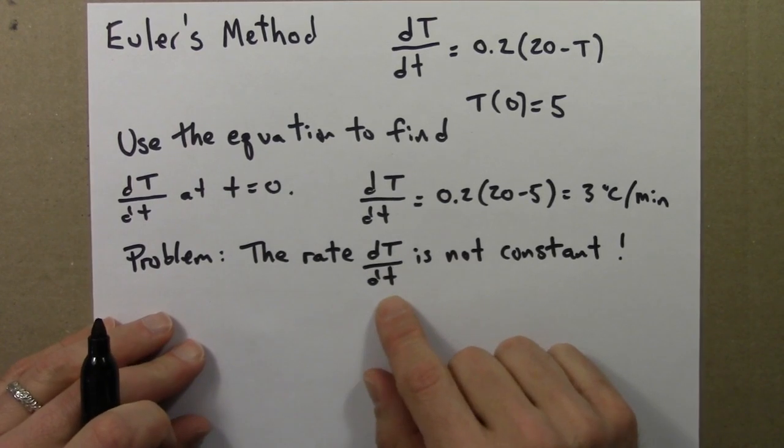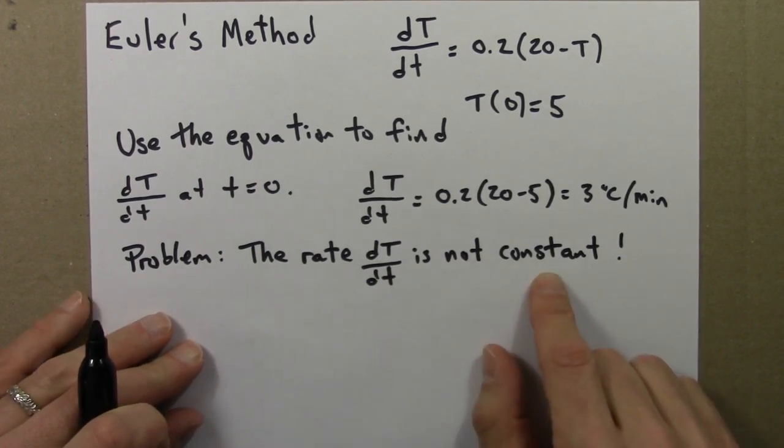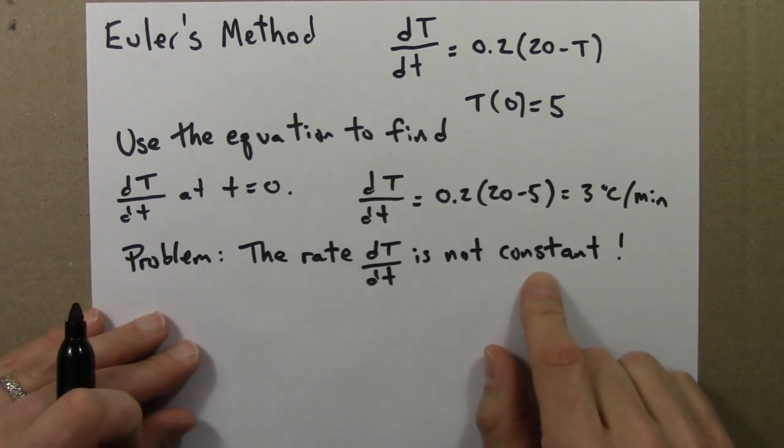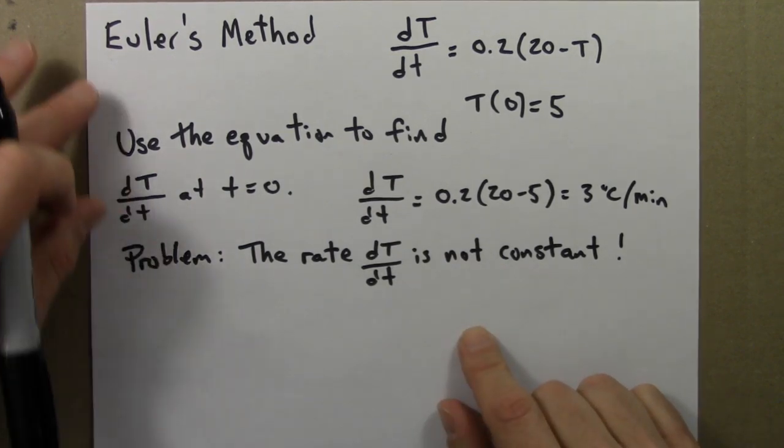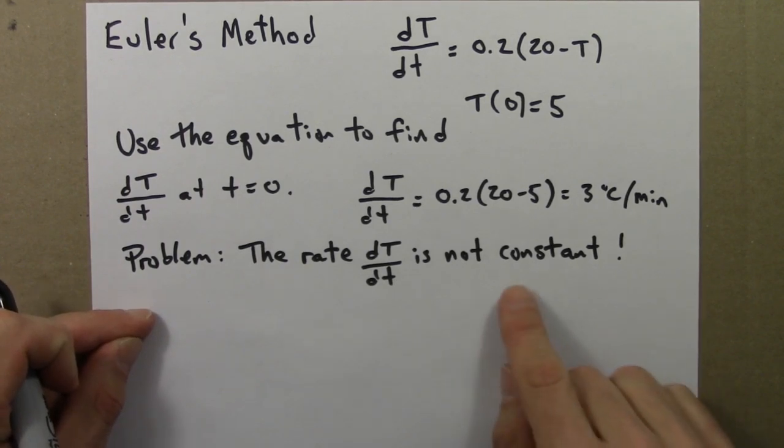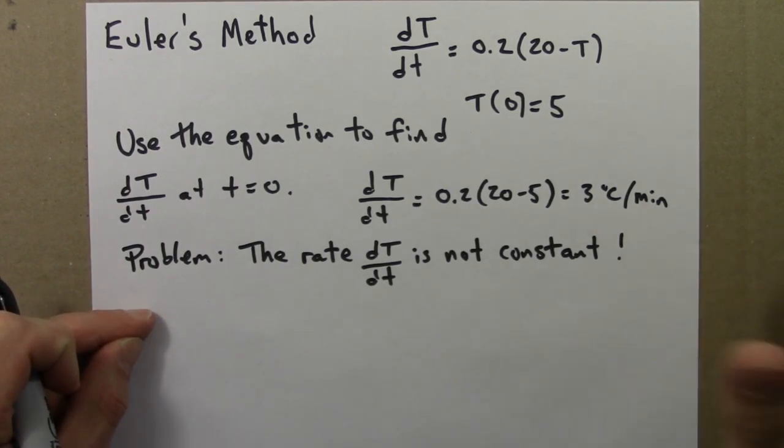We have a problem. The rate is not constant. So we have to cope with this problem somehow. And the coping mechanism that we'll use in Euler's method is just to ignore the problem. We'll just pretend that it is constant for, let's say, a 2 minute interval.